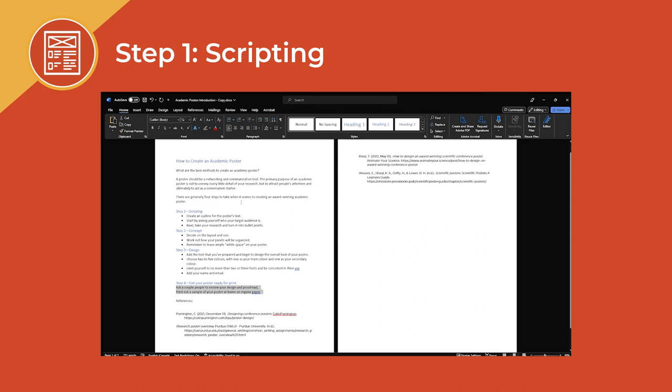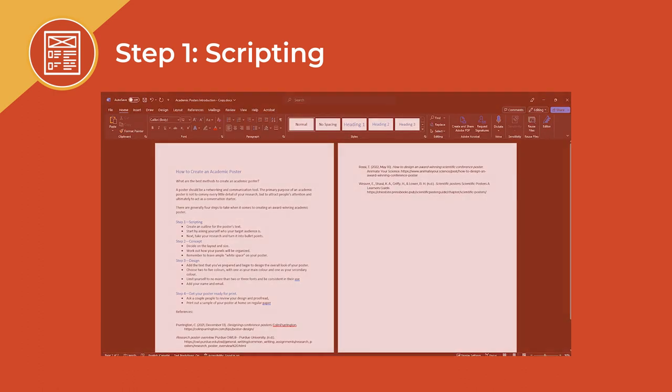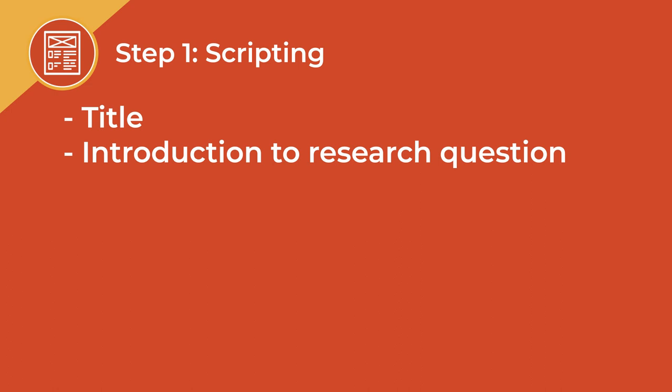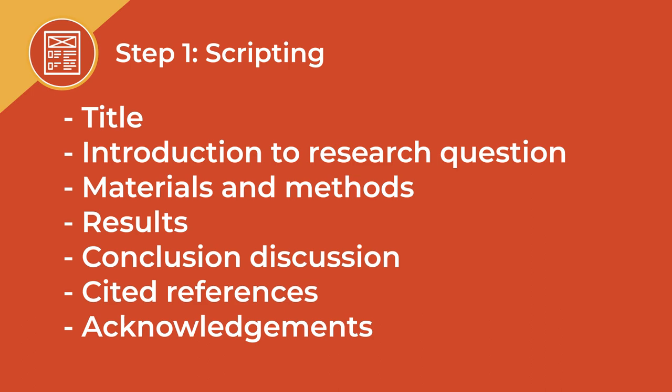Then, take your bullet points and organize them into sections with headers. Generally, these sections should include a title, an introduction to your research question, a brief overview of your materials and methods, your results, an insightful discussion of your conclusion, properly cited references, acknowledgements of the assistance and support you receive from others, and contact information.